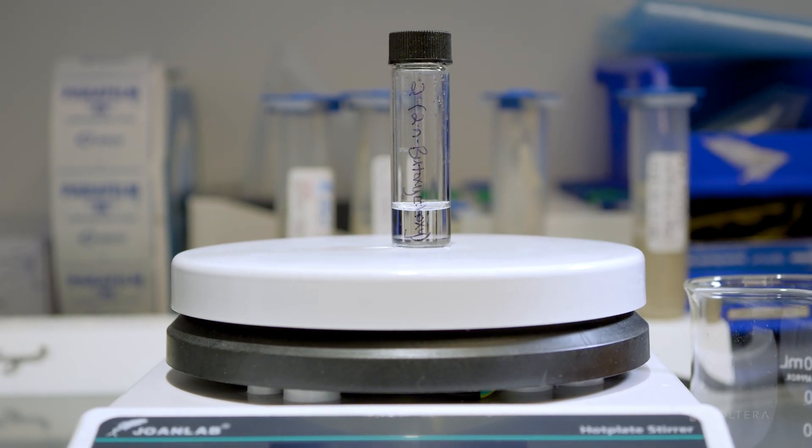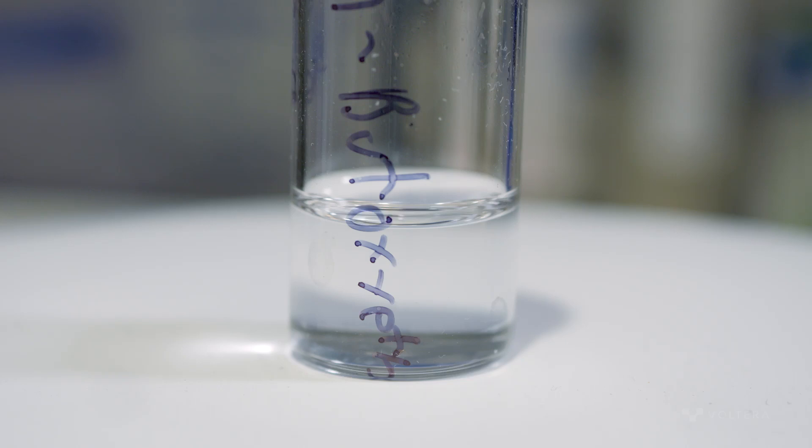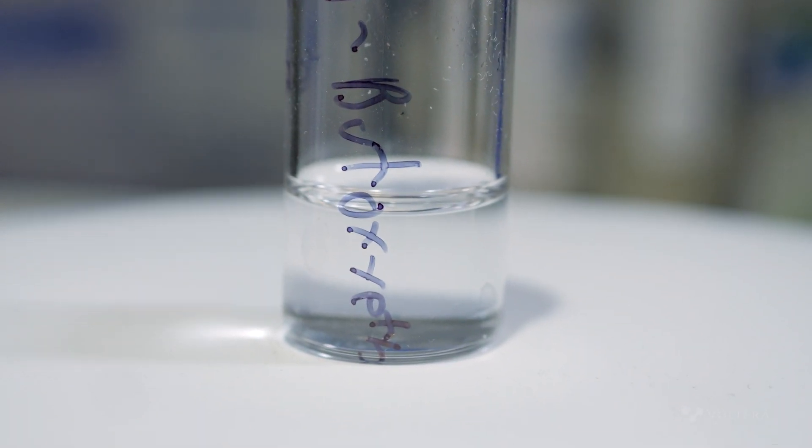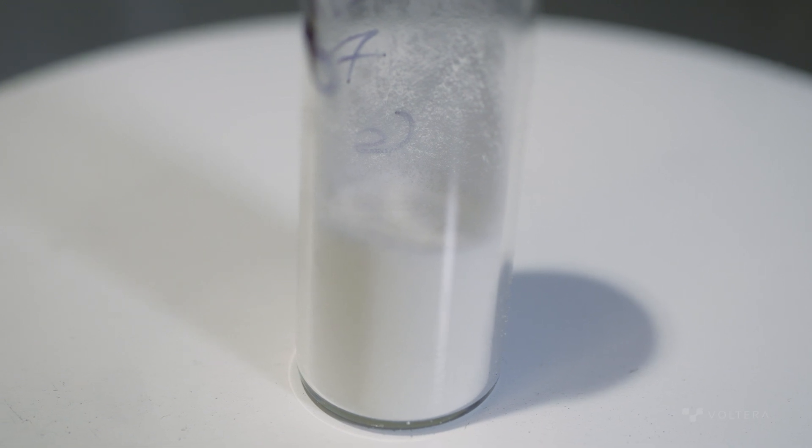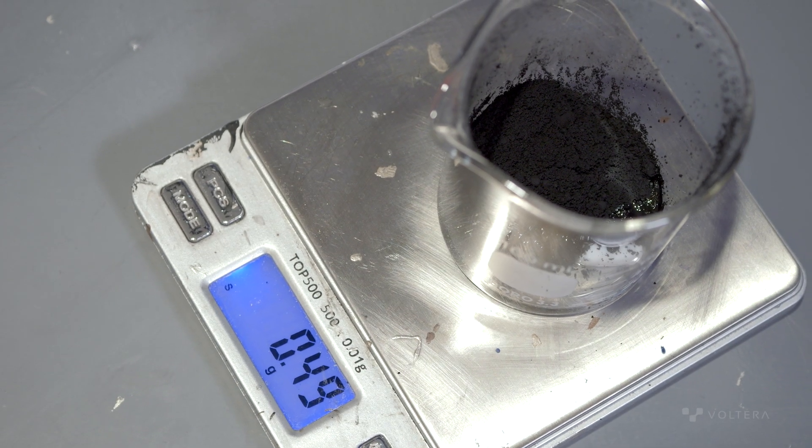The solvent we selected was butyldiglycol acetate, a common solvent for inks and toners, and our polymer was polyvinylpyrilidone. We chose these materials after researching which solvents and polymers would work best with a carbon filler.